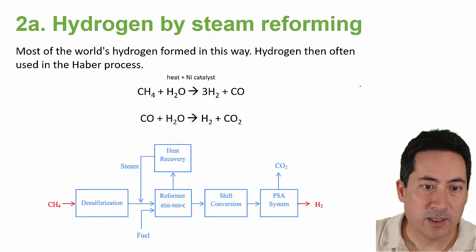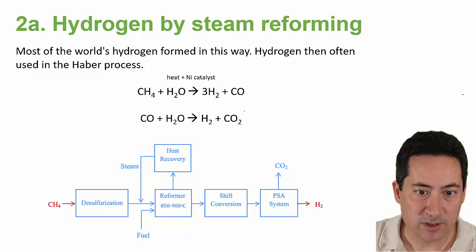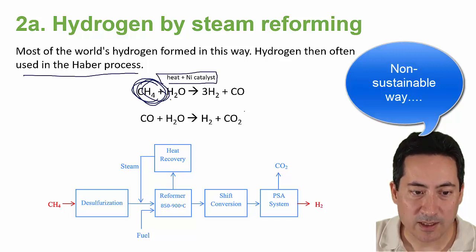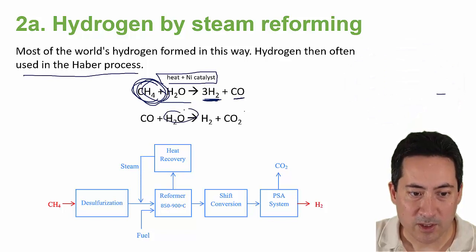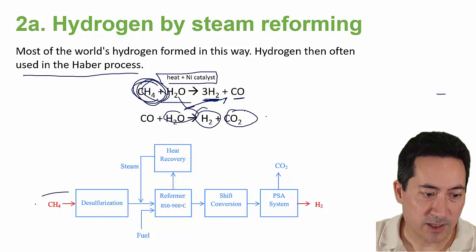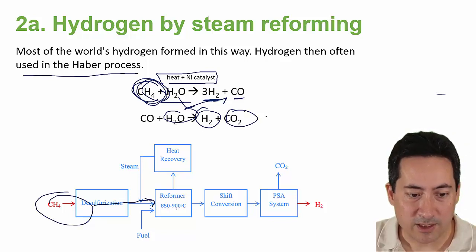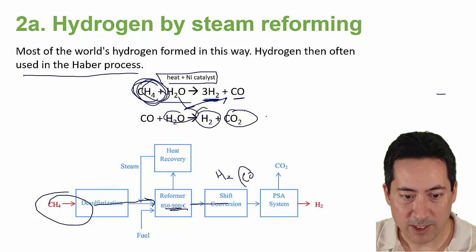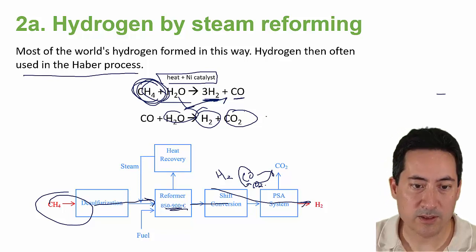Moving on to hydrogen production — most of the world's hydrogen is produced in a non-organic way. We take methane, apply heat and a nickel catalyst, and react it with water, which creates hydrogen gas and carbon monoxide. That carbon monoxide then further reacts with water to produce a bit more hydrogen and carbon dioxide. So the overall products are H₂ and CO₂.